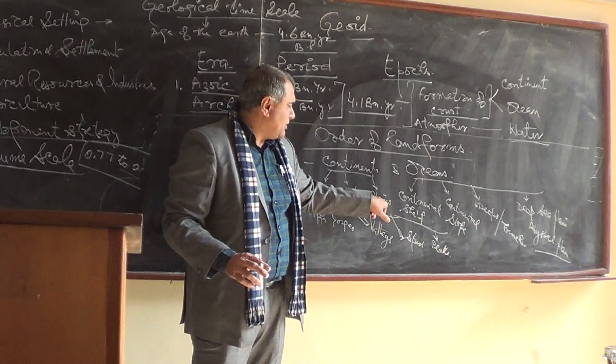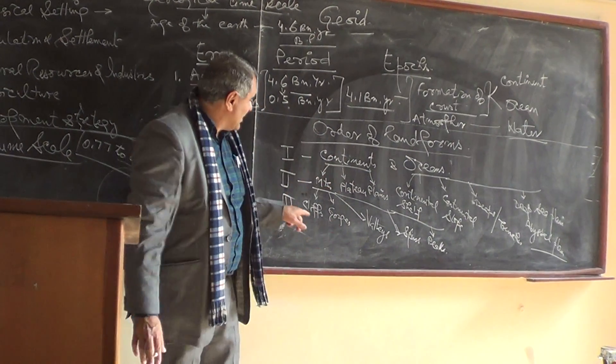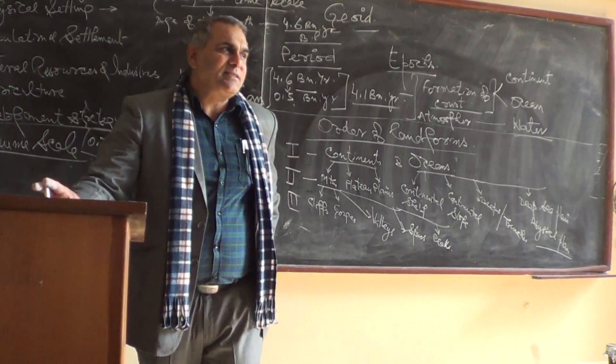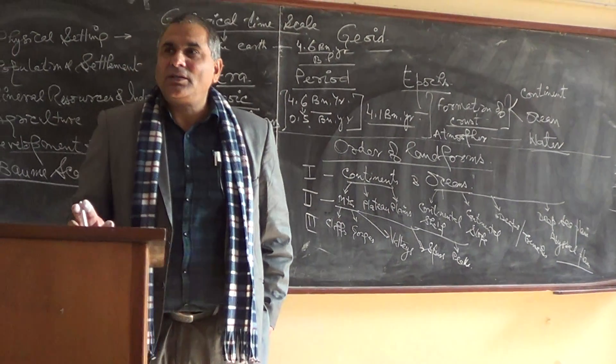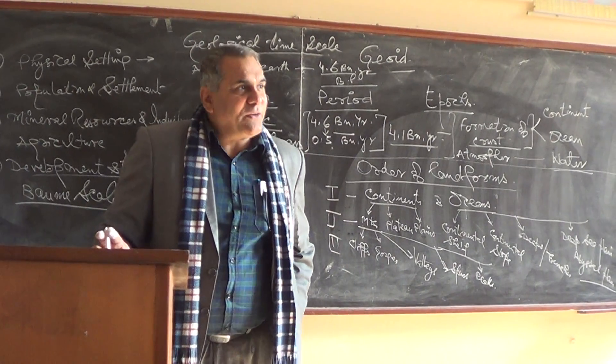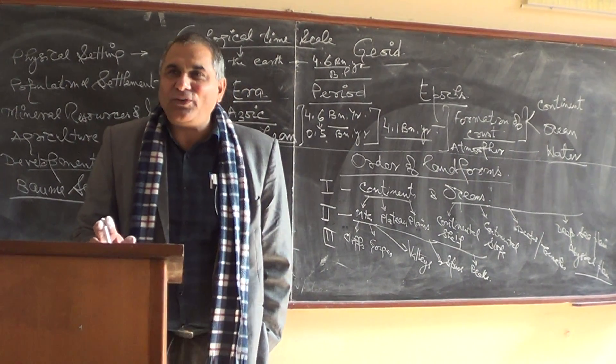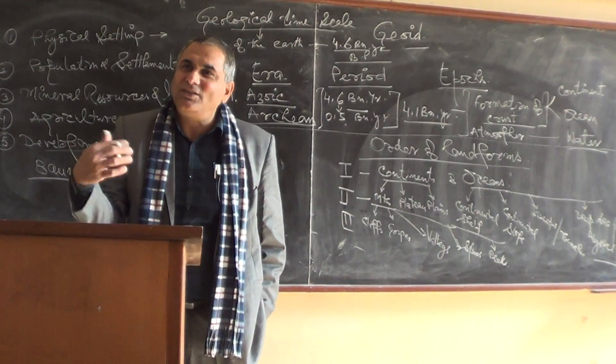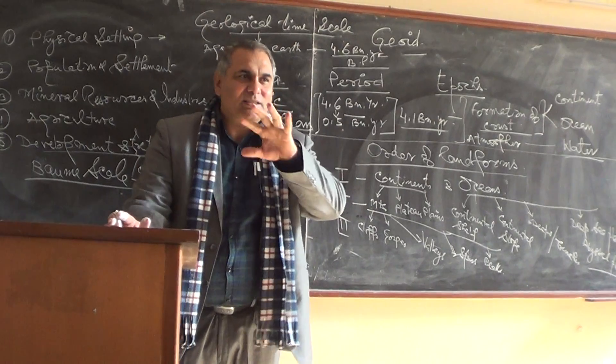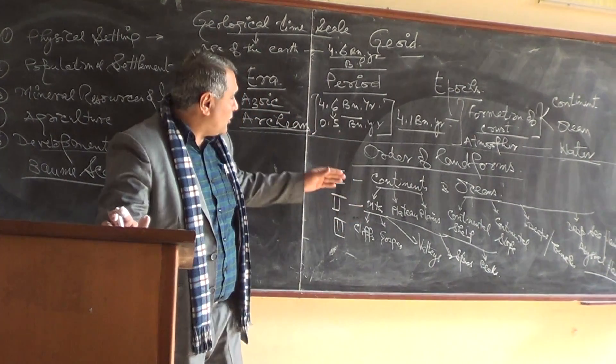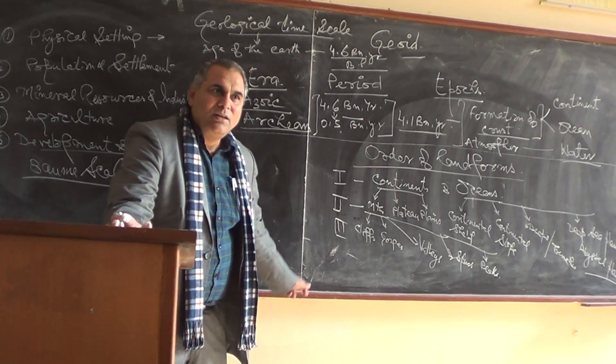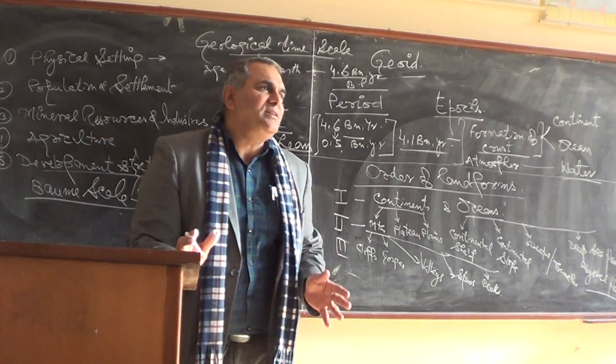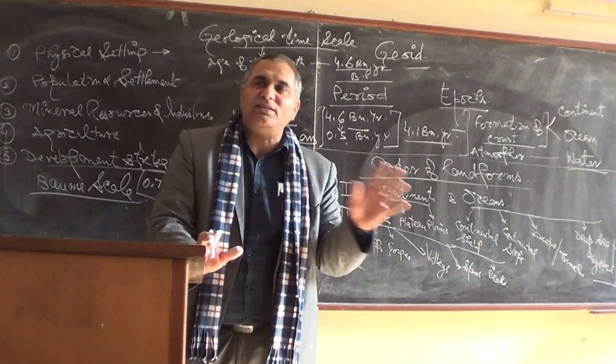Can you give me some example of third order landforms in the plane? Meandering, very good. Bluffs. All of these are third order. I hope you can understand. Is it clear for you? This is a very important parameter of understanding the relief features of any area.